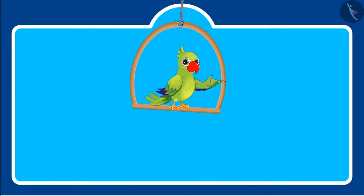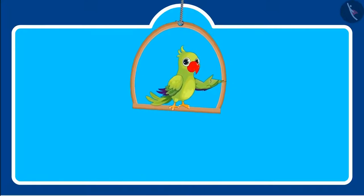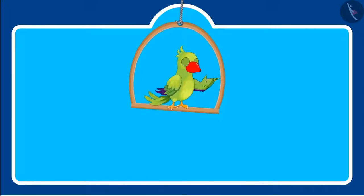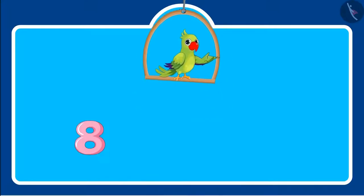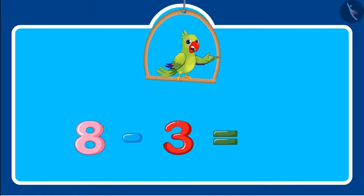Can you write this in a systematic way? Yes, this is how we will write it in a systematic way: eight minus three equals five.